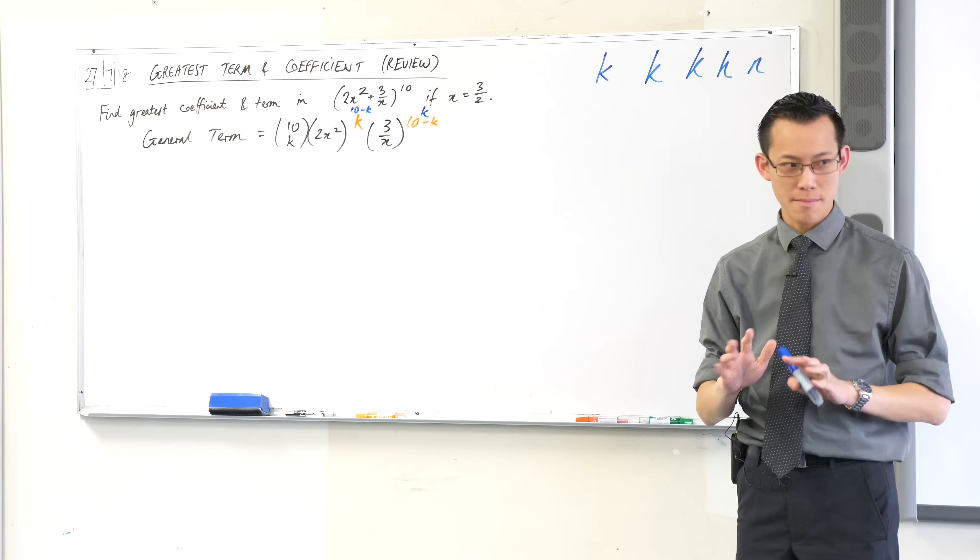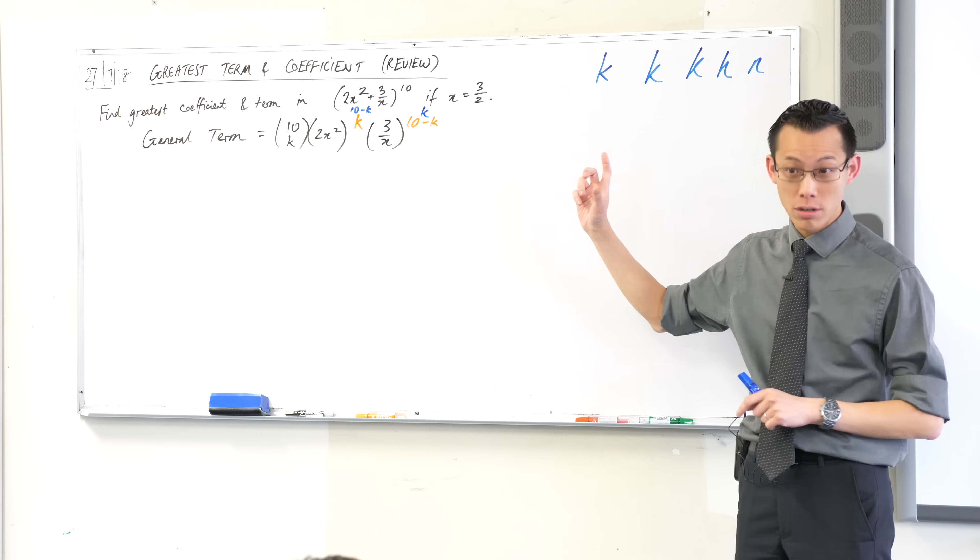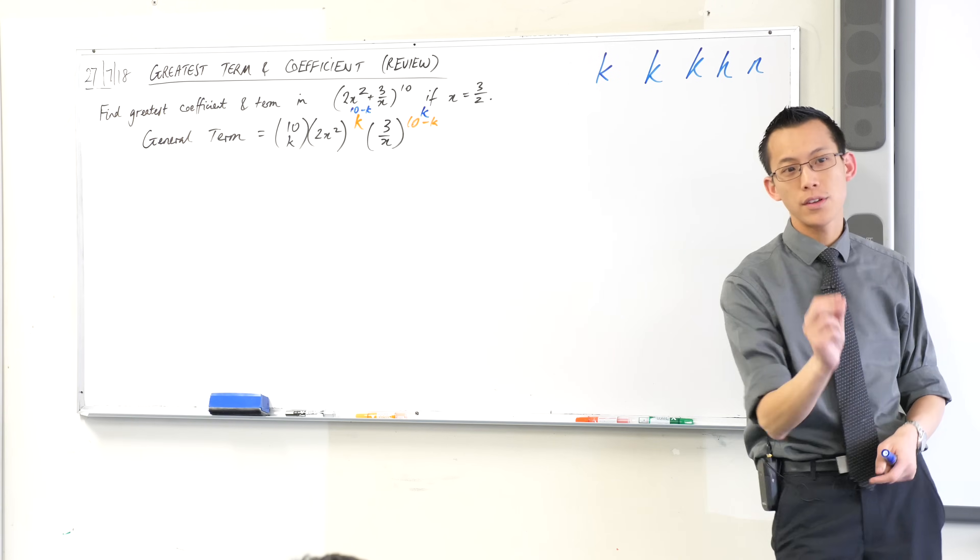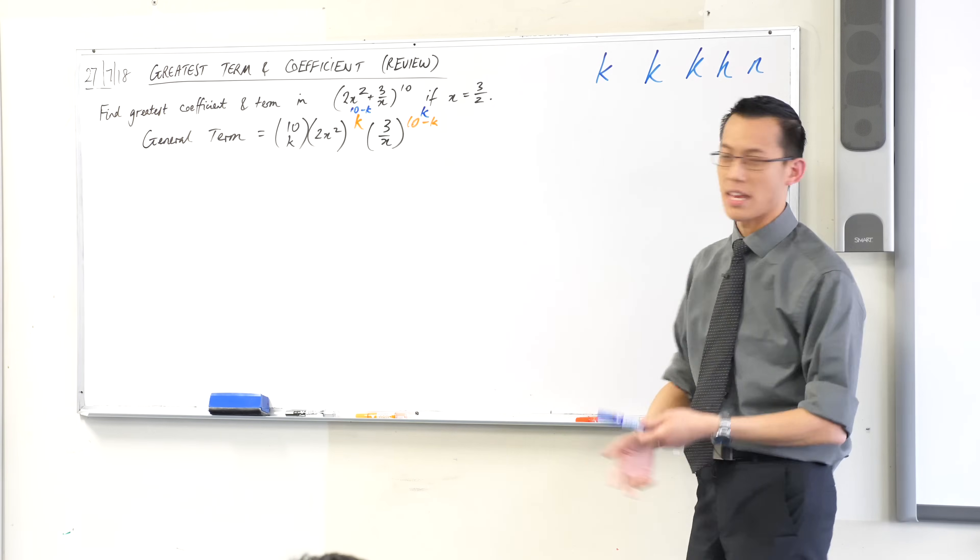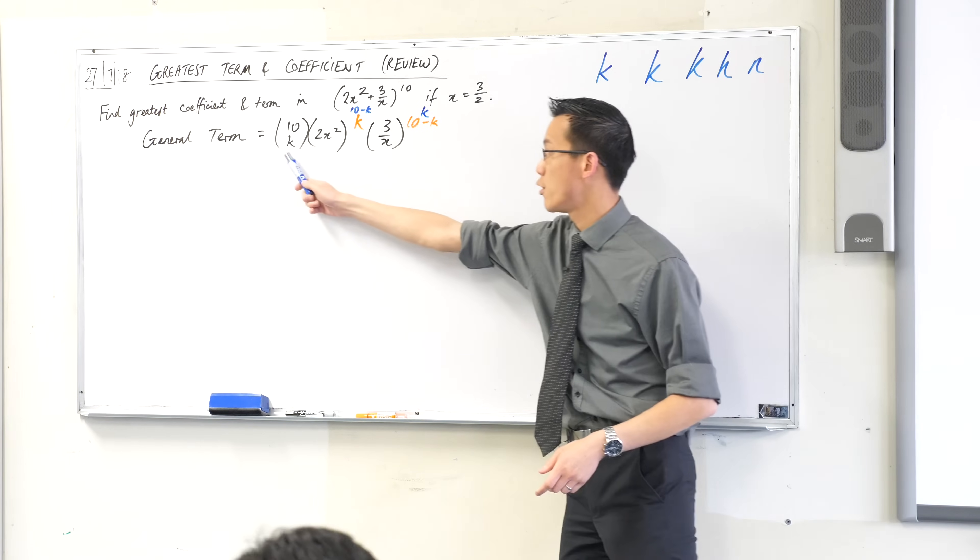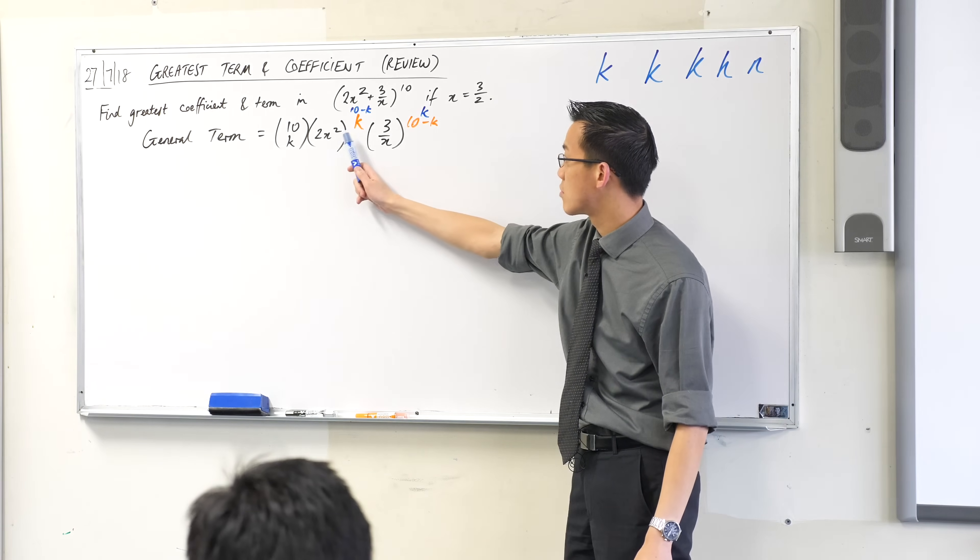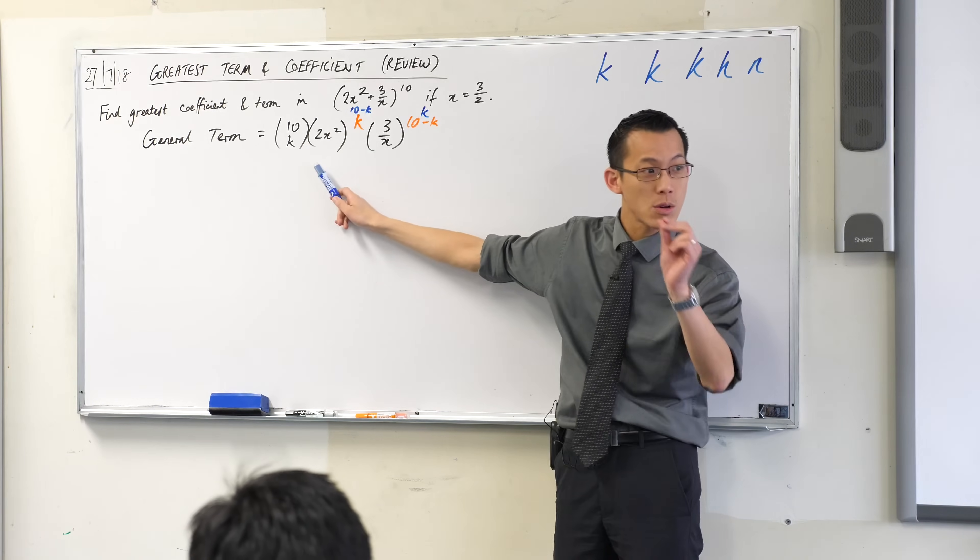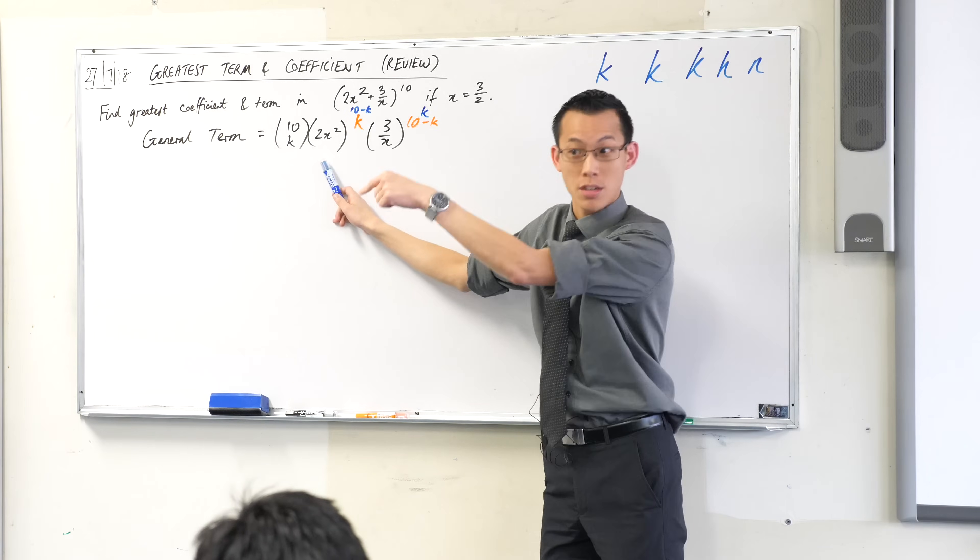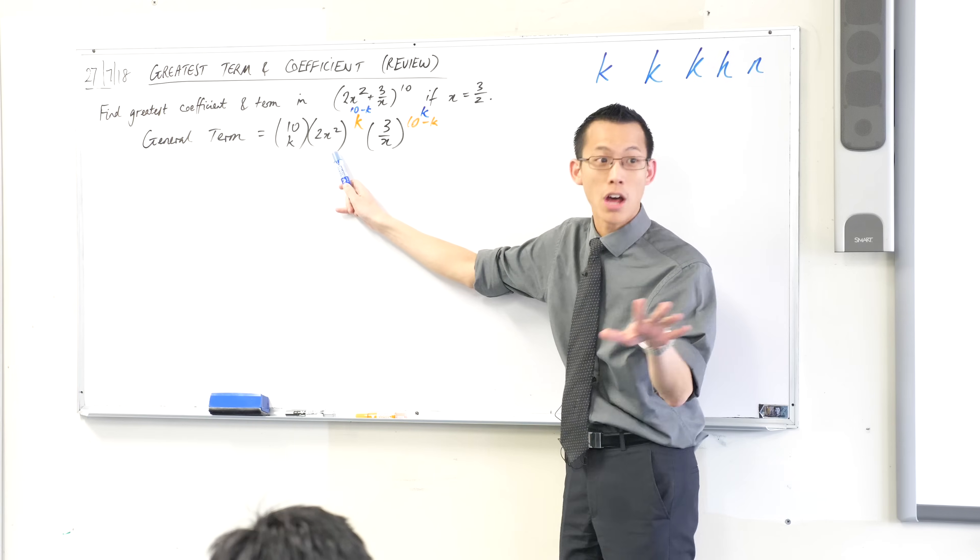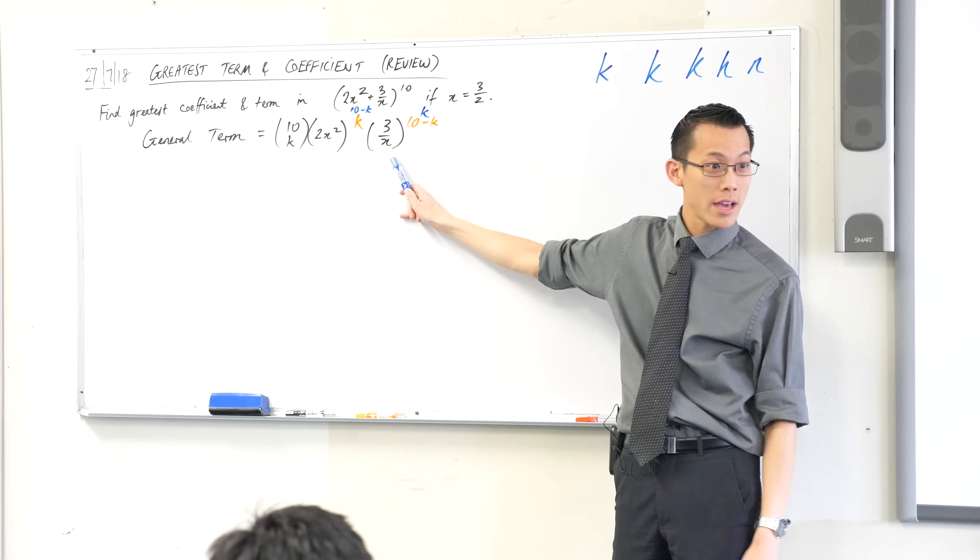It shouldn't matter because if I can put either, they should give me the same expansion in the end, right? The difference will be, say for example the first term. We know the binomial coefficient will always start with 1. If we started with the k here, then when k equals 0, which is the first term I'm going to write down, how many of these guys do I have? None. So you'll have 10 of these. 10 minus 0. So your first term will be 1 times 3 on x to the power of 10.